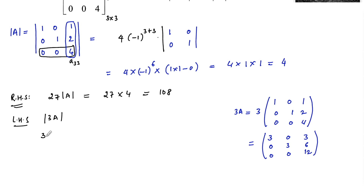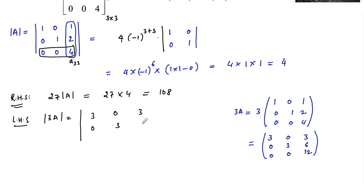The determinant of 3A is the determinant of [3 0 3; 0 3 6; 0 0 12]. We can expand along the third row or first column since there are zeros there.